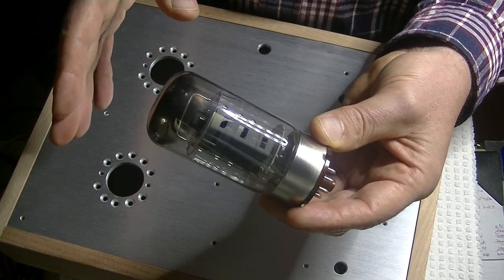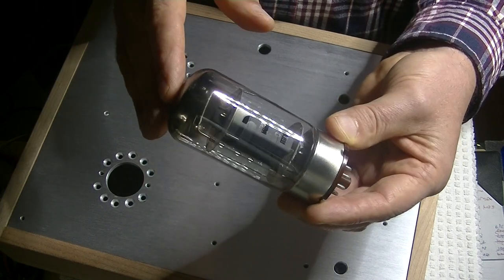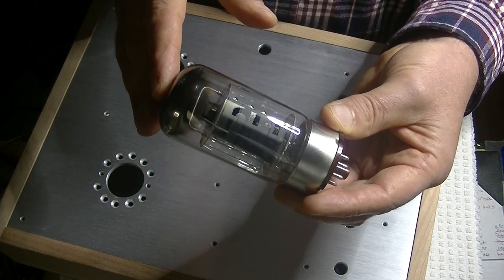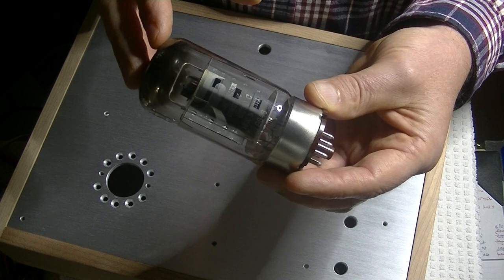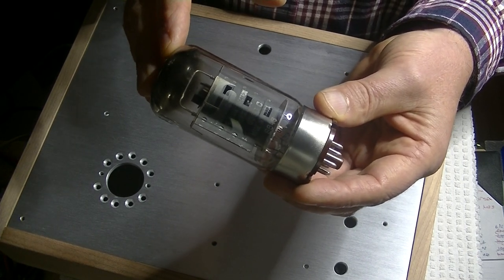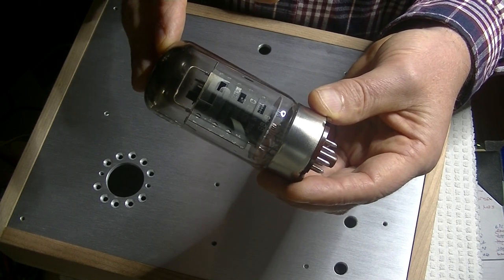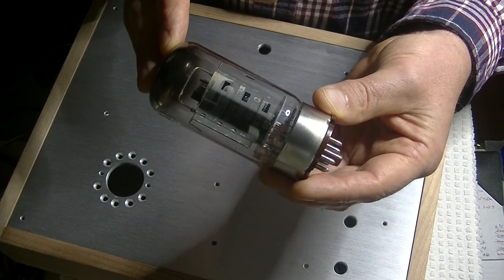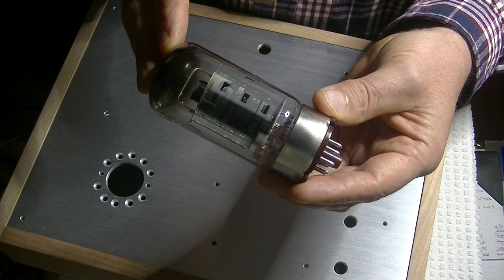Now, why would an amp use two different power tubes? Well, because of the sonic signature of the tubes. An EL34 is a very warm-sounding tube, but it's a little light on the bass, and it's a little light on the power. But it's a gorgeous-sounding tube.